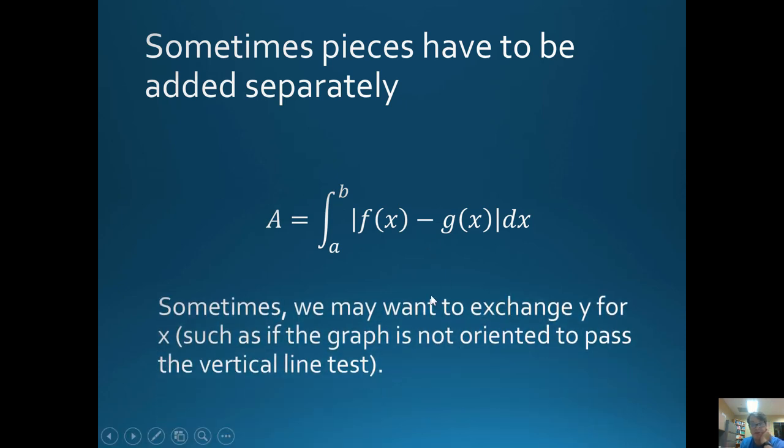Now sometimes we may want to exchange y for x. Sometimes you have to be clever about this. See, the problem - you remember the vertical line test? The vertical line test is where you make sure that the vertical line at any one point is only crossing the function once. Because if the vertical line, for example, let's say you have a sideways parabola - what is the area between a sideways parabola and a line? Well, the problem is this doesn't pass the vertical line test. And so the normal rules of differentiation don't apply because it's not a function.